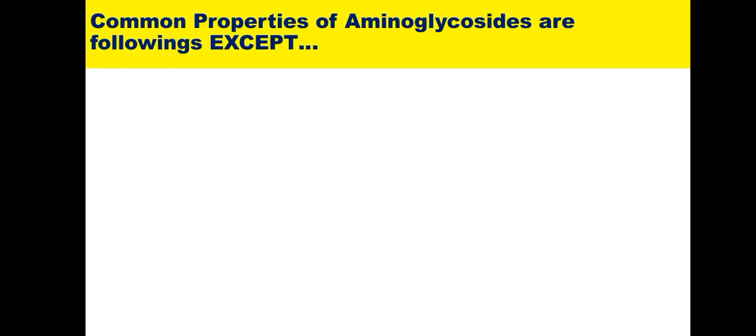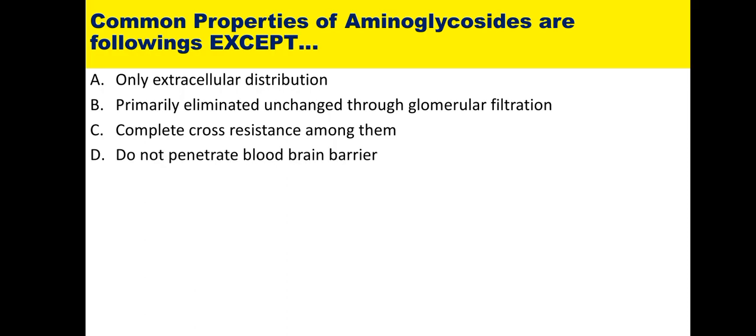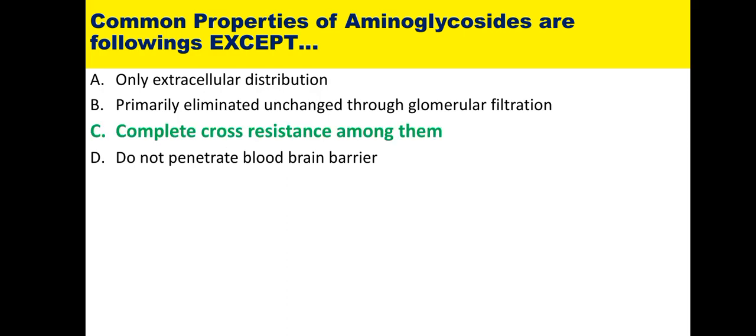Ninth: common properties of aminoglycosides — except which? Aminoglycosides are highly ionized in solution, have only extracellular distribution, and are primarily eliminated unchanged through glomerular filtration; hence dosages are adjusted according to creatinine clearance. These drugs cannot cross the blood-brain barrier due to their chemical properties. Cross resistance exists among them but it is partial, not complete. So the incorrect statement is 'complete cross resistance among them.'